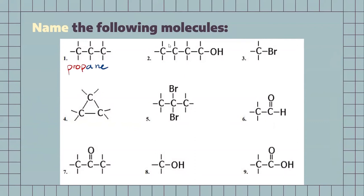Next one, we have a four-carbon chain with hydroxide, so we know it's going to be an alcohol. Since it's four carbons, it's going to be butanol. If it was just an alkane, it would be butane, but it had to change the ending for an alcohol.